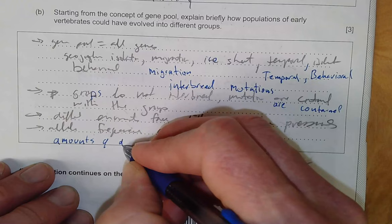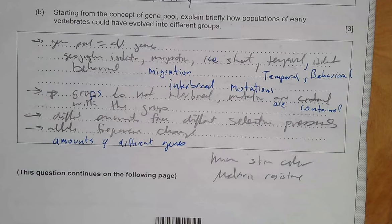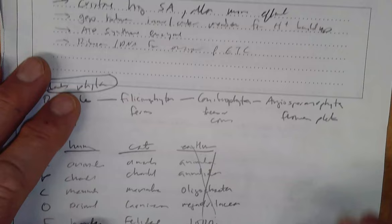And the allele frequency changes. The amounts of different genes change, and that's something that can be measured. Scientists can look and test for different alleles and see if those alleles are any different in frequency. Now last question of part A.